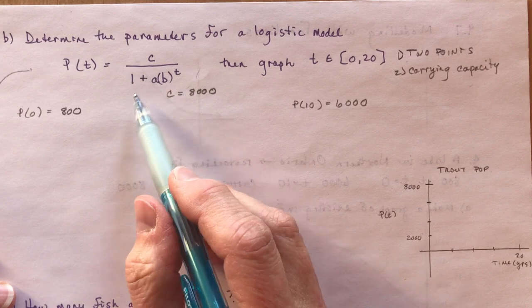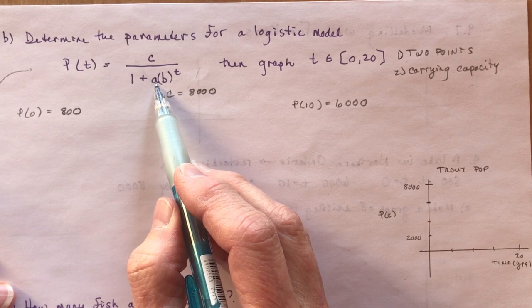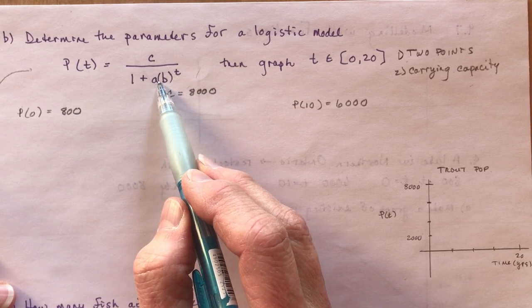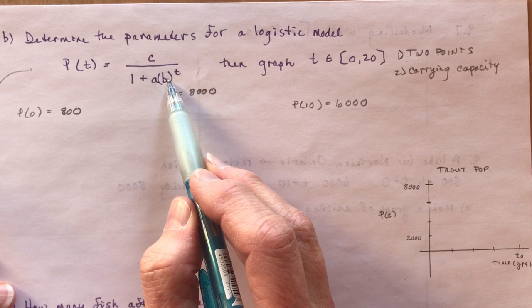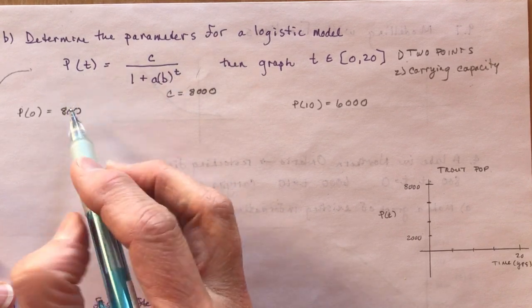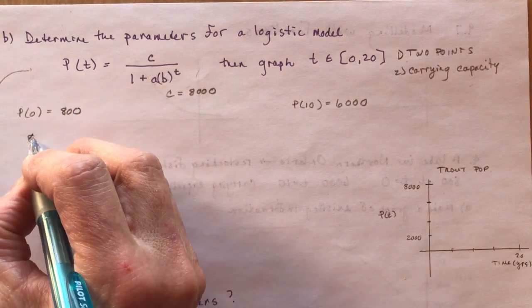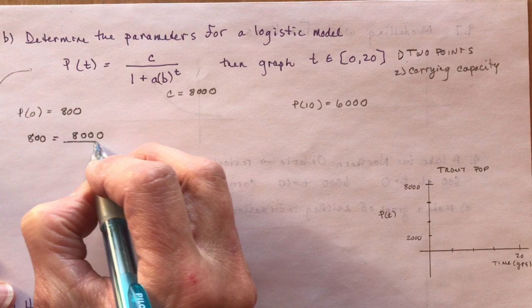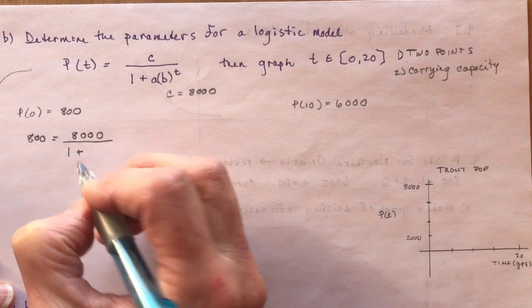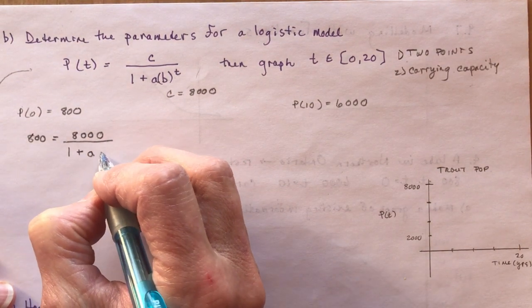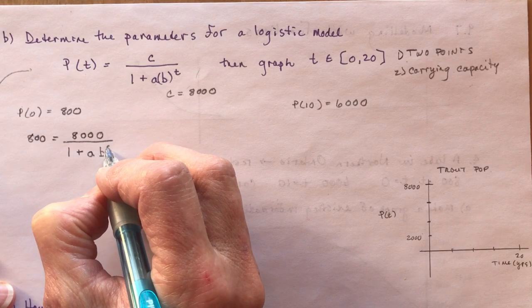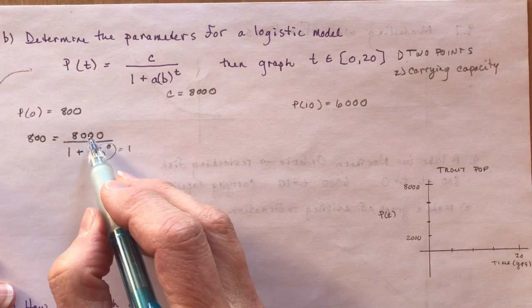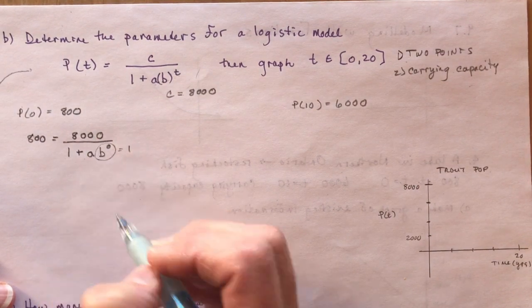So I'm going to use that, first of all, to find A. Now you can see that if I put in time zero here, that would make B to the power of zero equal to 1. So that's perfect. We can solve for that. So our population at time T equals 0 is 800. The carrying capacity is 8,000. And I'm dividing it by 1 plus, now my A value is what I'm solving for, times B to the power of zero. Now again, this is just going to be 1. So that makes everything really pretty. So I just have 8,000 over 1 plus A, and I can solve for A.